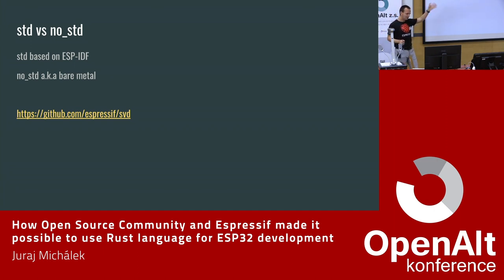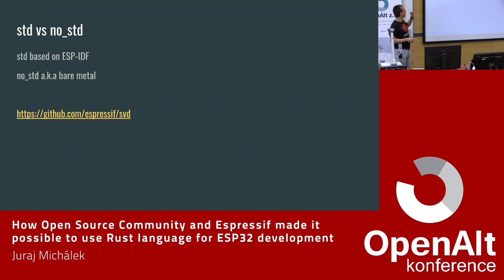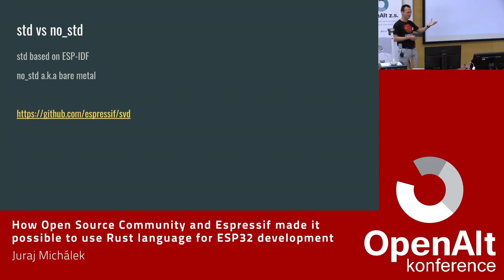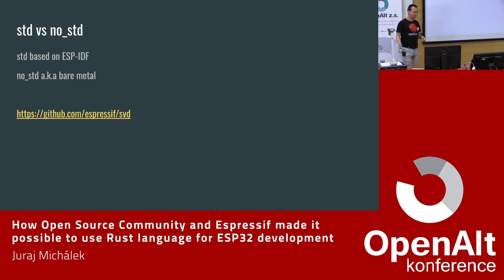There's another dimension to consider: we have two architectures — Xtensa and RISC-V — and on top of that there's the battle in the Rust world between STD and no-STD. STD is when you have all the libraries, all the fancy stuff: print, format, string commands, memory allocators — everything ready. Versus the no-STD world, also called bare metal, where there is literally nothing.